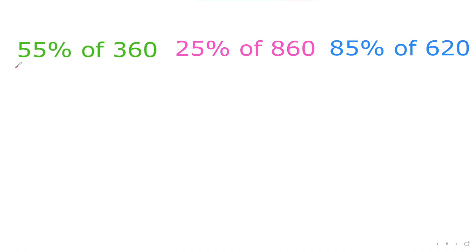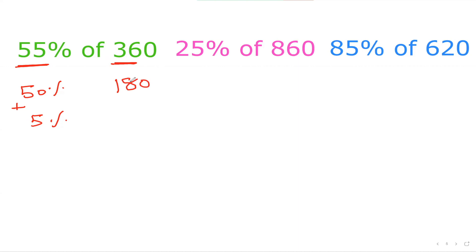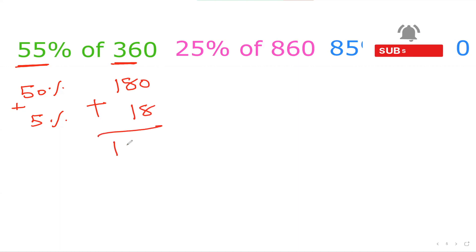Let's find 55 percent of 360. I'll get 50 percent plus 5 percent. For 50 percent, I just think about 36 — half of 36 is 18 — then add the zero back, so 50 percent is 180. Because I have the 50 percent, I move the decimal point one step left to get 5 percent, which is 18. Adding them: 180 plus 18 equals 198.